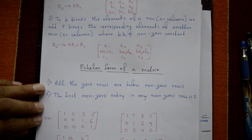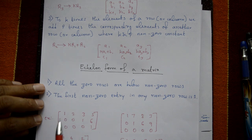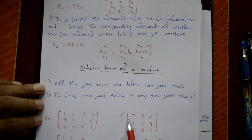Examples of echelon form are mentioned. First example: matrix with first row 1 2 3 5, second row 0 0 0 0, third row 0 0 0 0 — first entry is one as required. Second example: 1 7 8 3, then 0 1 6 9, then 0 0 0 0 — see the leading ones in each non-zero row.